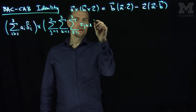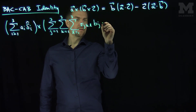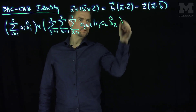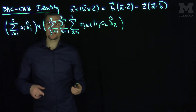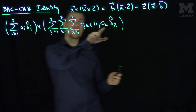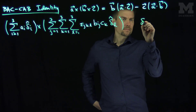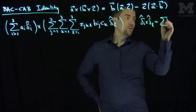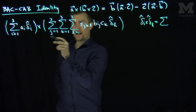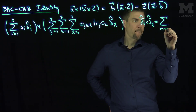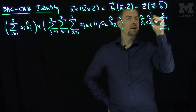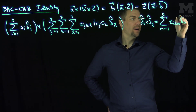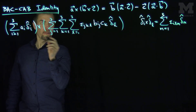Continuing with the cross product of b and c: the sum l goes from 1 to 3 of epsilon-jkl, then b_j, then c_k, and then delta-l hat. Now when I take the cross product of these, I need to do the cross product of delta-i and delta-l. That gives the sum over a new index m from 1 to 3 of epsilon-ilm times delta-m hat. So we're going to have five sums.